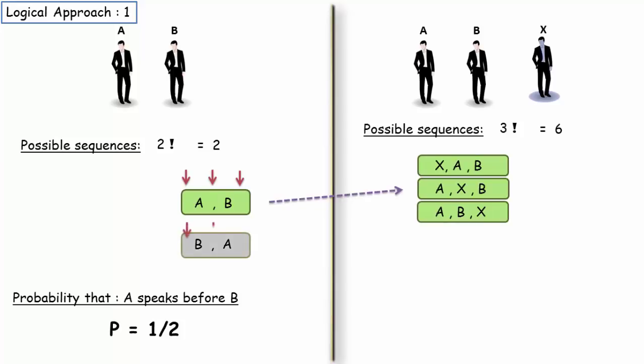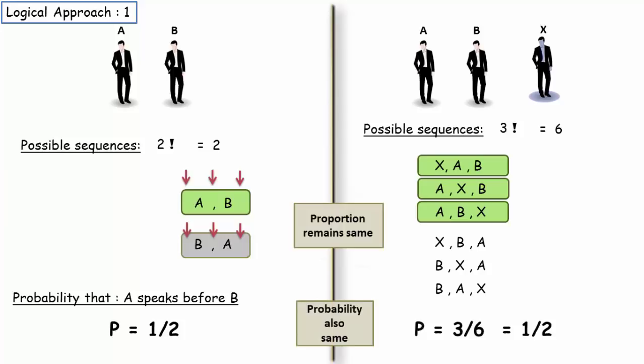Similarly, the other invalid sequence will give us 3 invalid sequences. Observe carefully that the proportion remains the same in both cases. So, the probability is also going to be the same. That's 1 by 2.